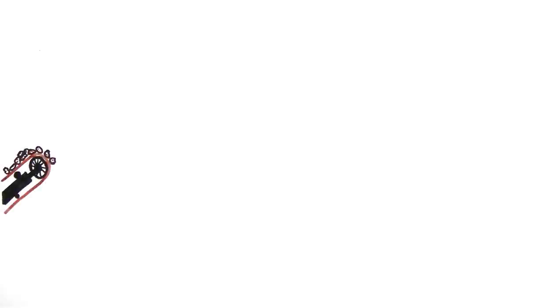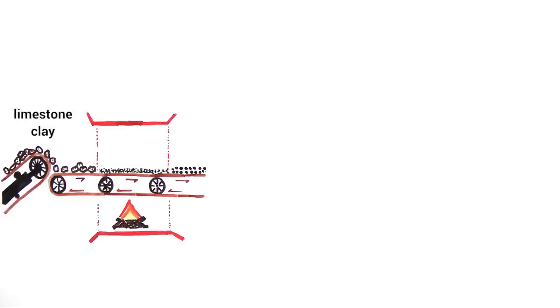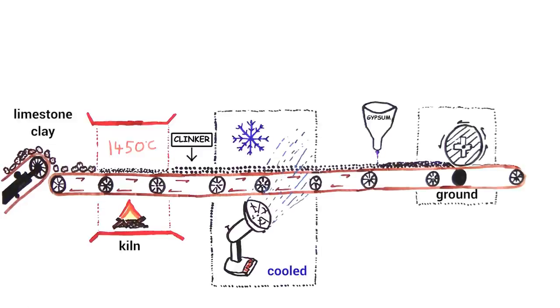To manufacture cement, limestone and clay are heated together in a large kiln at about 1450 degrees Celsius. This produces an intermediate material called clinker, which is rapidly cooled, mixed together with gypsum, and ground to make cement.